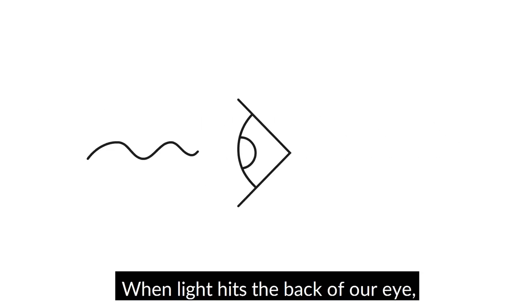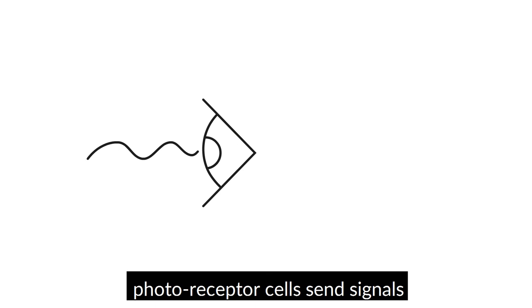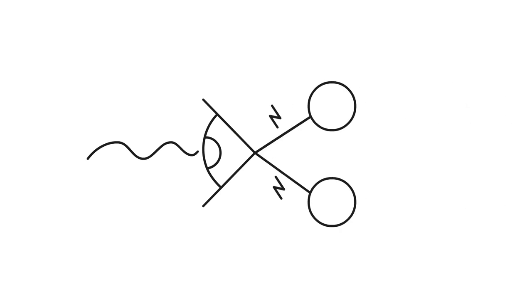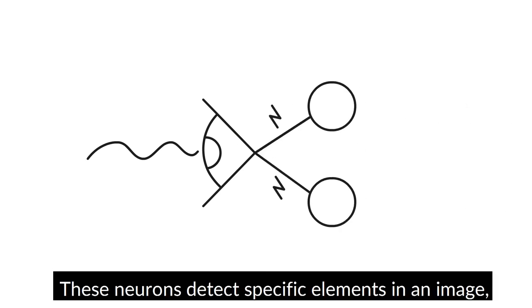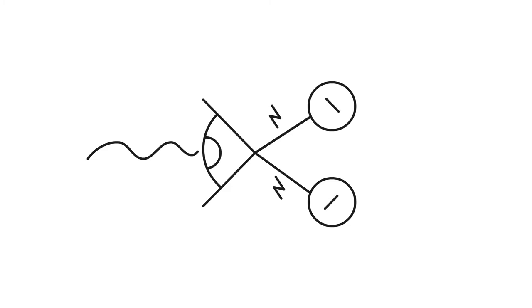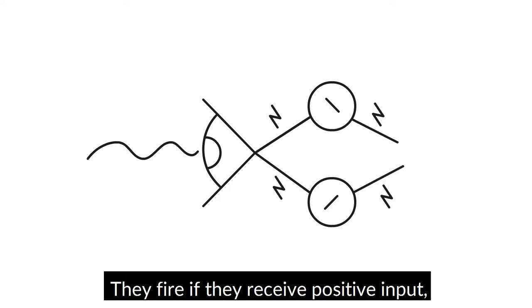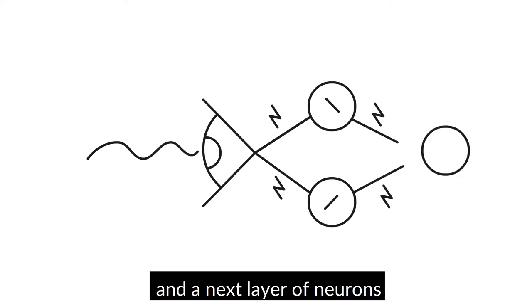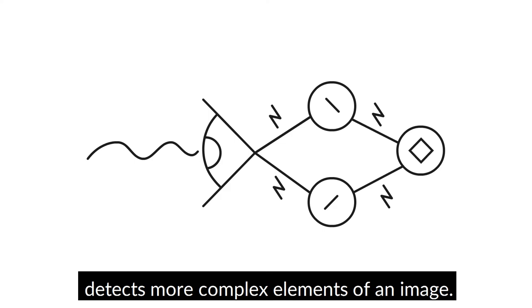When light hits the back of our eye, photoreceptor cells send signals to the neurons in the brain. These neurons detect specific elements in an image, for example a certain line at a certain angle. They fire if they receive positive input, and the next layer of neurons detects more complex elements of an image.